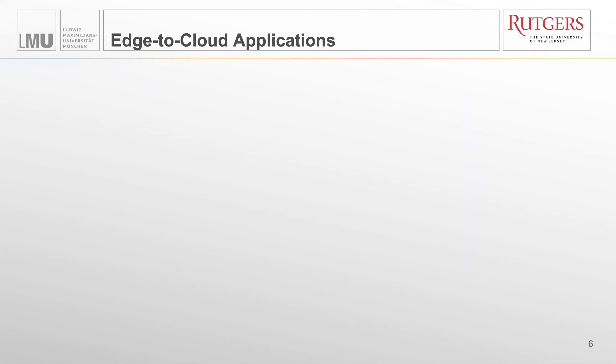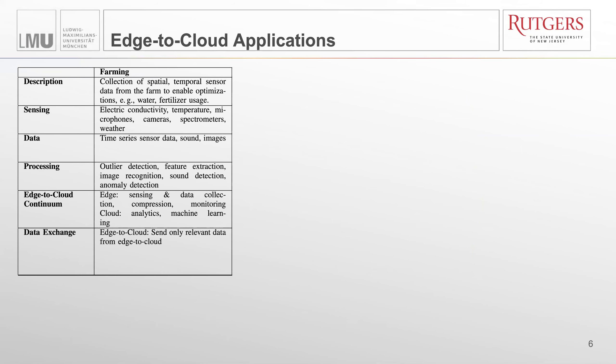Let's get started with the edge-to-cloud application scenarios. As I mentioned, we investigated three scenarios: farming, manufacturing, and scientific applications, and the degree of complexity increases as we go from left to right. We investigate different aspects of these applications — how those applications sense and collect data, the characteristics of the data, common processing patterns, and how those applications utilize the edge-to-cloud continuum and the characteristics of the data exchange.